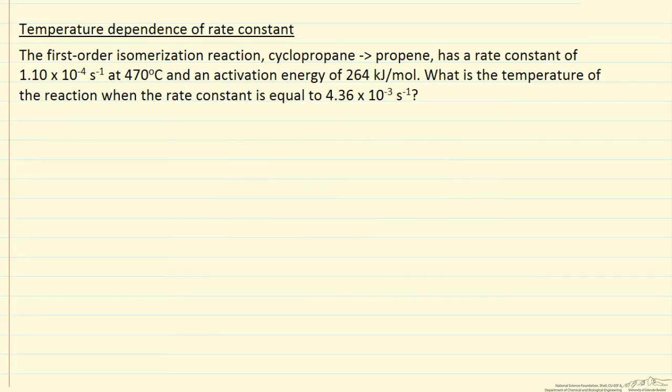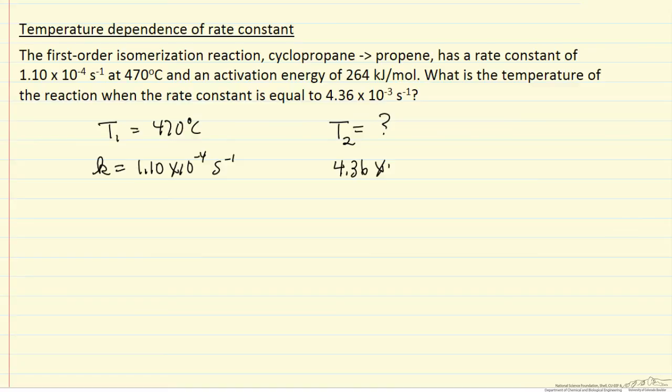Let's list our information. Let's call this temperature 1, 470 degrees C. The rate constant at this temperature is given. And then a temperature that we don't know, call this temperature 2. We're given the rate constant at this temperature. It's larger as we expect because of the activation energy.